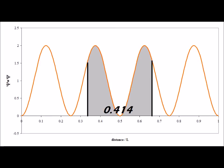For the n equals 4 state, we note the three nodes, including one exactly at L over 2. The middle third is shaded in light gray, and we find that its total area is 0.414.